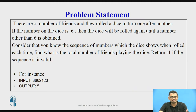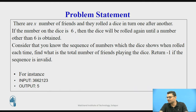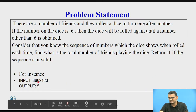So if a 6 occurs, the person rolling the dice gets another chance. Consider that you know the sequence of numbers the dice shows when rolled each time. The problem is to find the total number of friends playing. Depending on the sequence of dice rolls we find the number of friends, and if the sequence is invalid we return minus 1. For example, consider the sequence: 3, 6, 6, 2, 1, 2, 3.